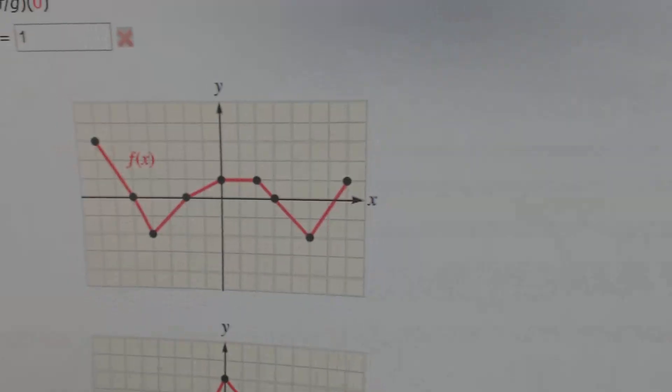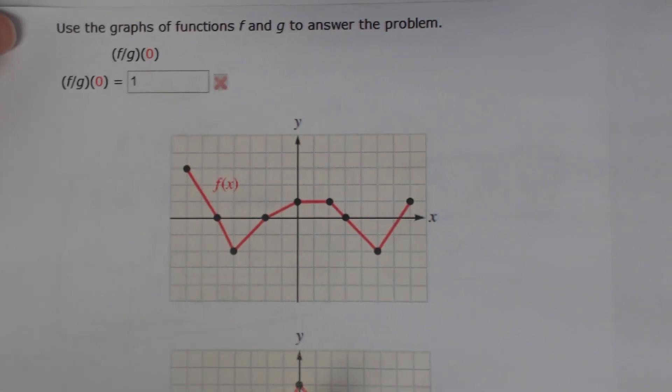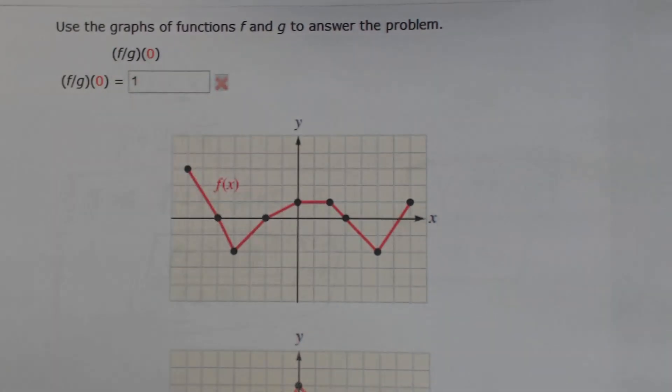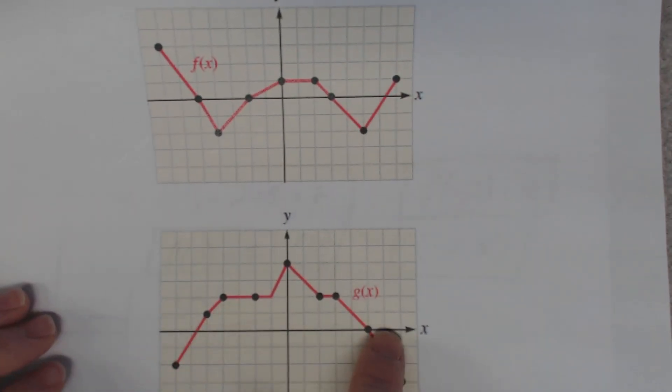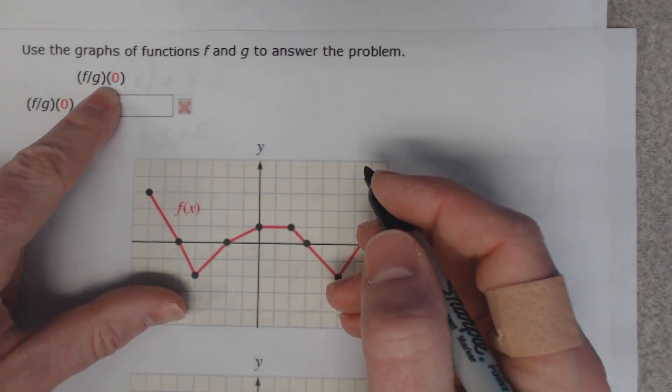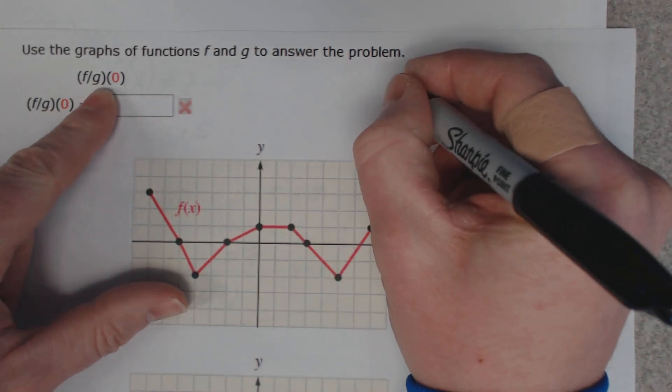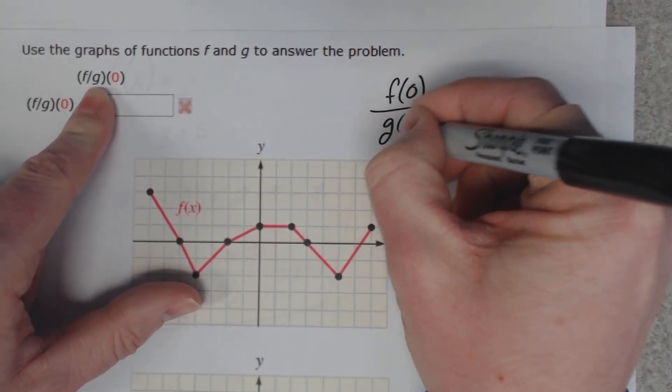So if you're given a question where they don't give you the function, they actually just give you a graph of the function. Here it says use the graphs of functions f and g to answer the problem. Here's the graph of f, and here's the graph of g. Well, it wants us to find f divided by g of 0. Well, (f/g)(0) is the same thing as finding f(0) divided by g(0).